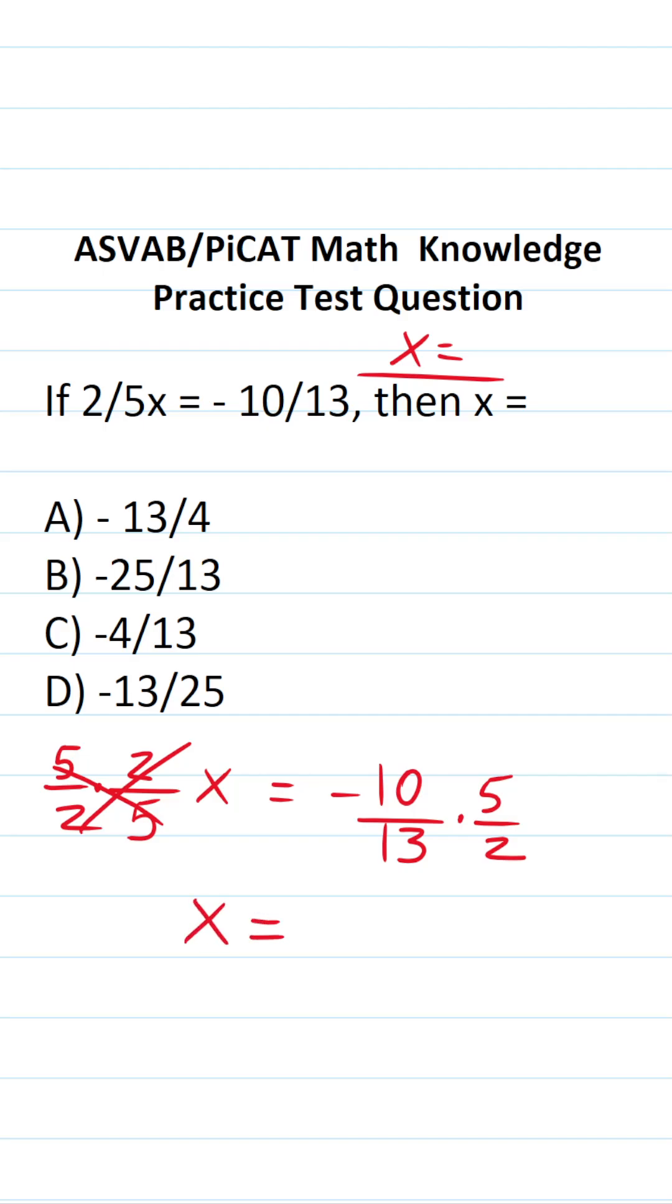Let's try to cross-reduce this part over here to make it as easy as possible to work with. I can say 2 goes into 2 one time, 2 goes into 10 five times. So this becomes x equals negative 5 over 13 times 5 over 1.